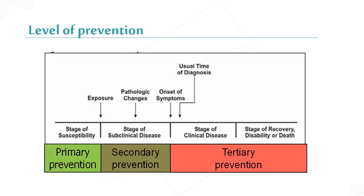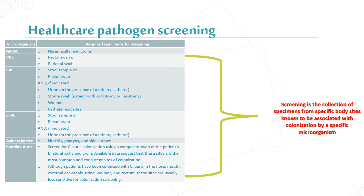The levels of prevention correspond to stages of disease: primary prevention applies at the stage of susceptibility; secondary prevention applies at the stage of subclinical disease; and tertiary prevention applies at the stage of clinical disease in the patient. Because we are talking about levels of prevention, we should mention the screening policy inside healthcare facilities. Screening is the collection of specimens from specific body sites known to be associated with colonization by a specific microorganism that could be the cause of an outbreak. We recommend always screening for MRSA, VRE, CRE, ESBL, Acinetobacter, and Candida auris.